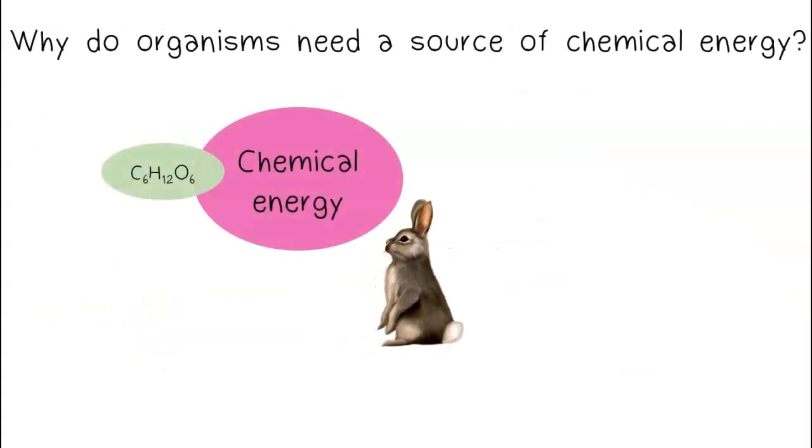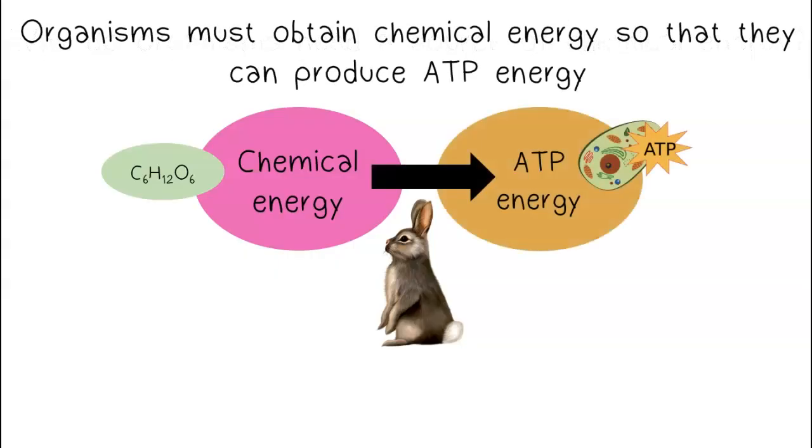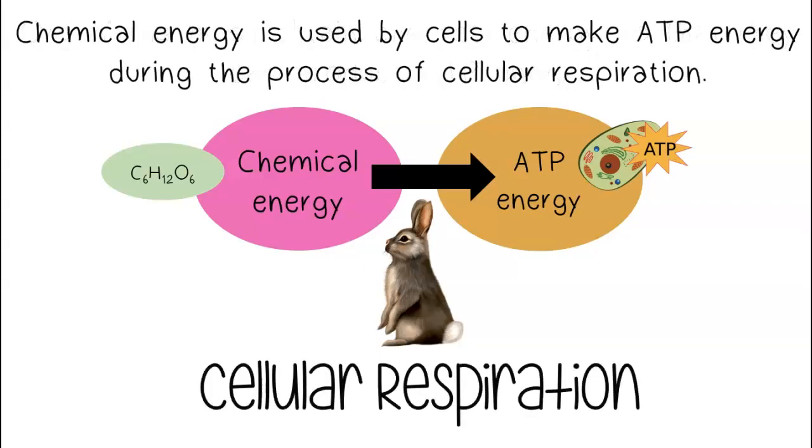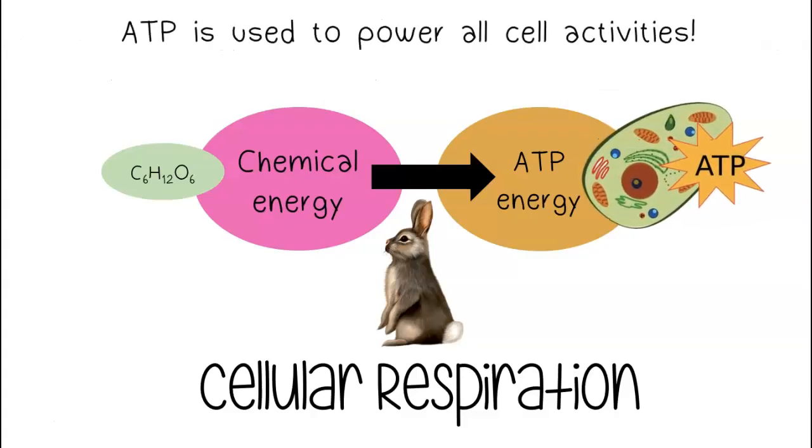Why do organisms need a source of chemical energy? Organisms must obtain chemical energy so that they can produce ATP energy. Chemical energy is used by cells to make ATP energy during the process of cellular respiration. ATP is used to power all cell activities.